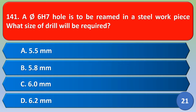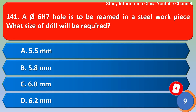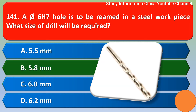Namaste. A 6H7 hole is to be reamed in a steel workpiece. What size of drill will be required? Option A: 5.5 millimeter, Option B: 5.8 millimeter, Option C: 6.8 millimeters. The correct answer is Option B, 5.8 millimeter.